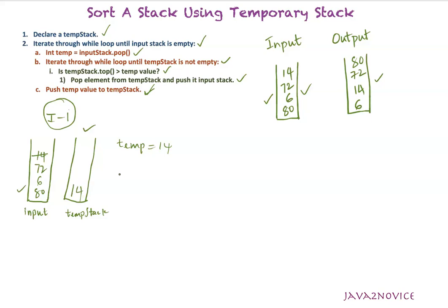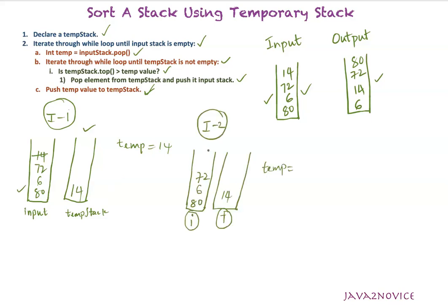Now we go to iteration 2. We pop out the element from the input stack and assign it to the temporary variable. We compare this temporary variable with the top of the temporary stack. Is 14 greater than 72? No. So we push the temporary variable to the temp stack and go to iteration 3.